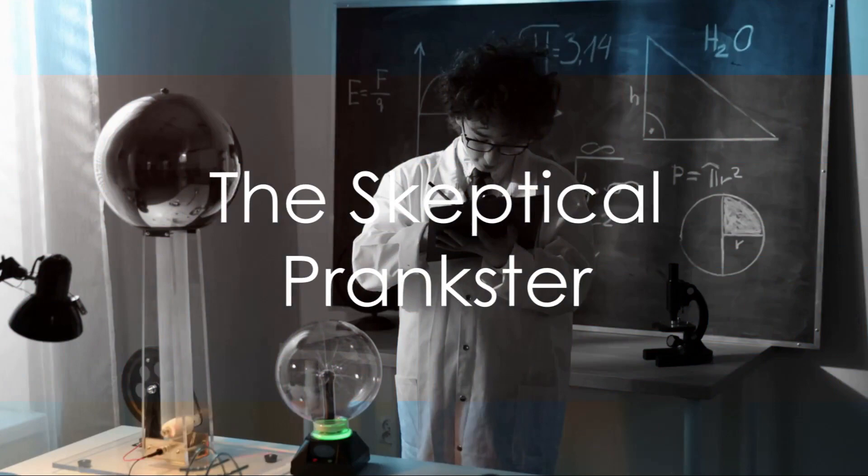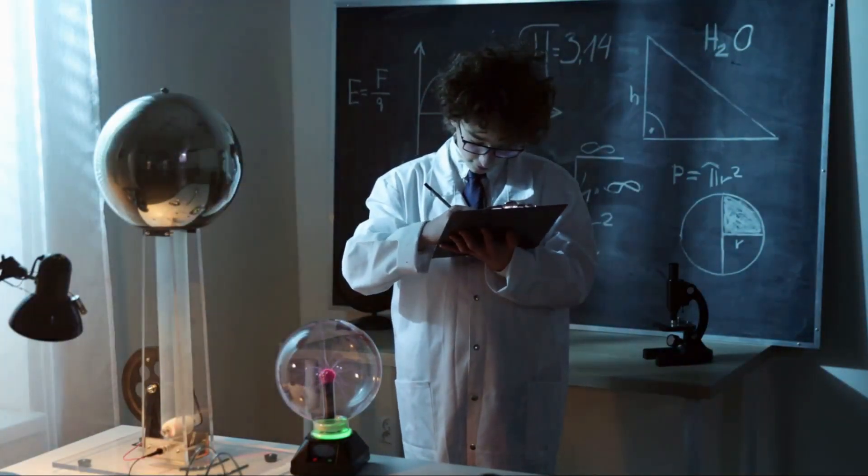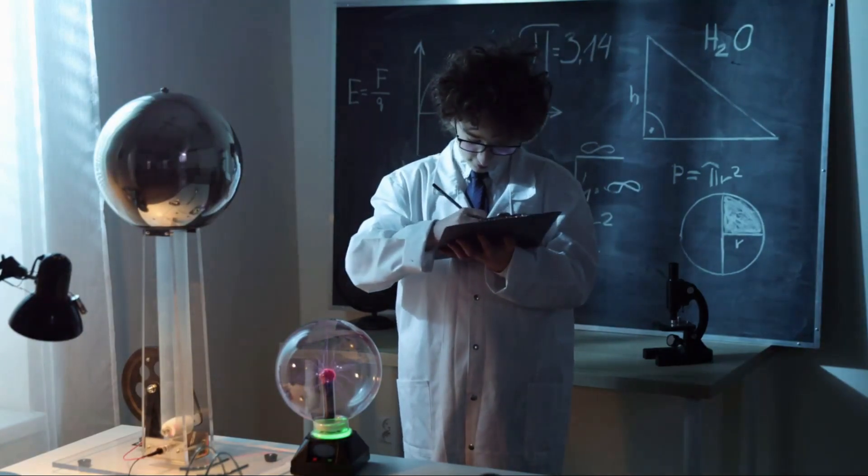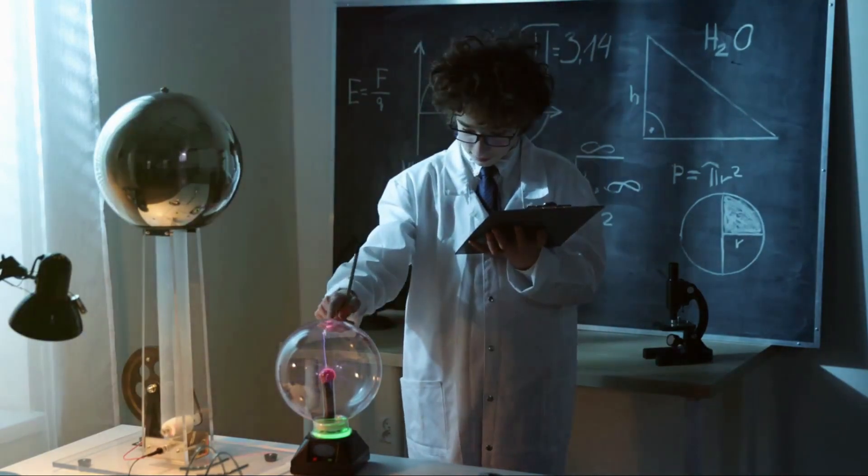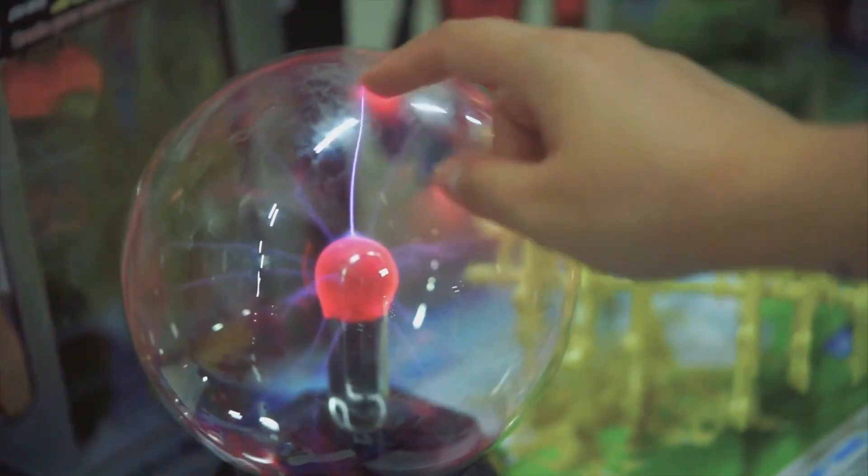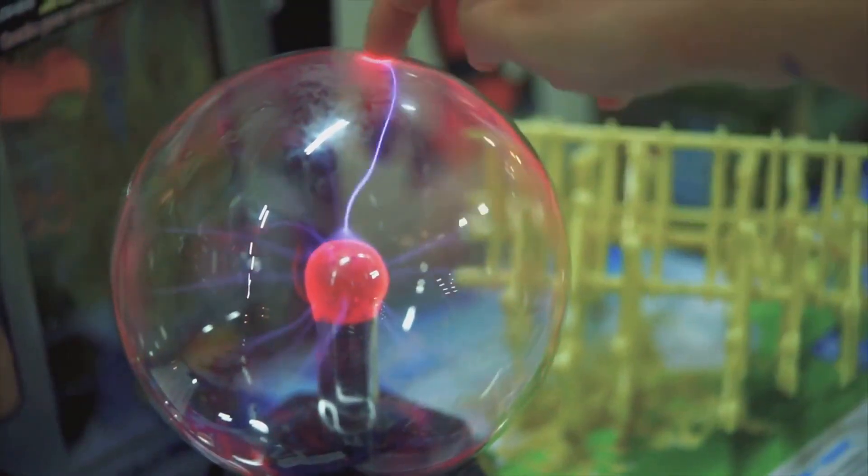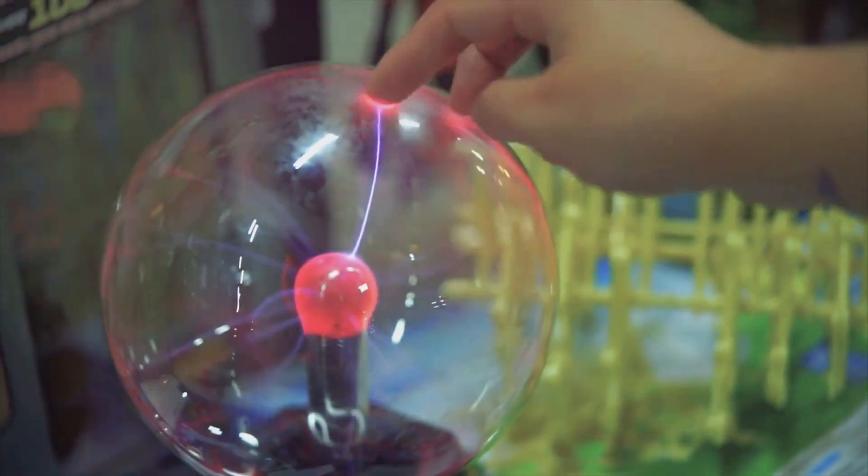Meanwhile, in France, another scientist, the mischievous Alessandro Volta, hears about Galvani's findings. Volta was known for his shrewd wit and a knack for pranks, always one to add a dash of humor to the otherwise serious world of scientific discovery. When word of Galvani's theory of animal electricity reached his ears, he couldn't help but be skeptical.